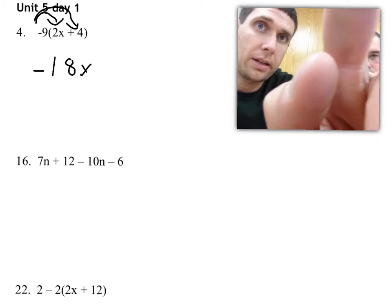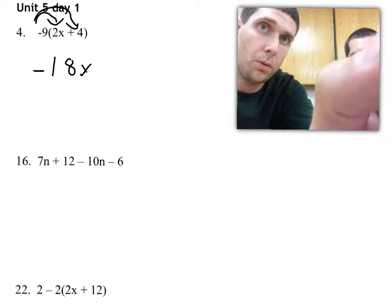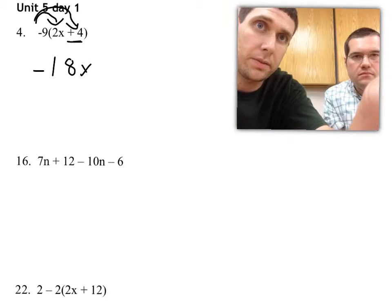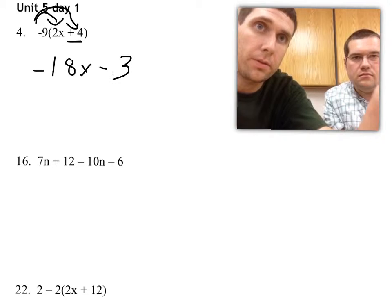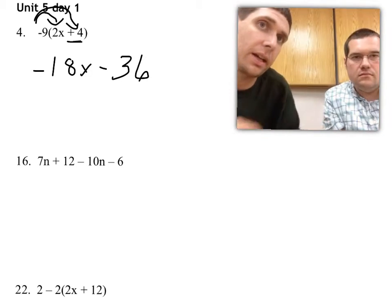And then I'm going to take negative 9 and times it by the positive 4. There's a positive 4 there, so negative times a positive is a negative. 9 times 4 is 36, so negative 18x minus 36.